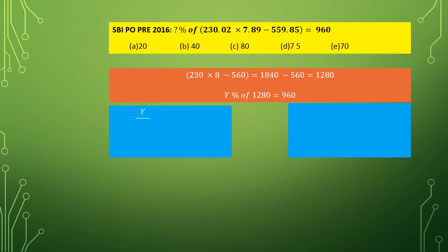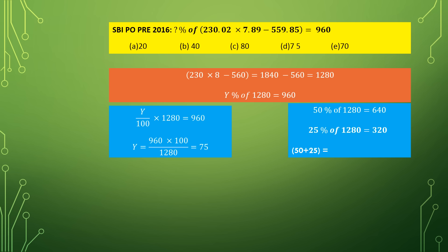This can be computed in two ways. First way: Y percent of 1280 means Y by 100 multiplied by 1280 equals 960, or Y equals 960 into 100 by 1280, giving Y equals 75. The second way: calculate 50% of 1280 by dividing by 2, which equals 640. Then calculate 25% of 1280 by dividing by 4, which equals 320. Therefore 50 plus 25 equals 75% of 1280 is directly equal to 960. The second way is much easier — first compute 50%, then 25%, then 10%, and try to add them to reach the nearest value.